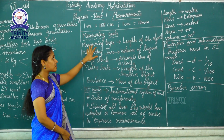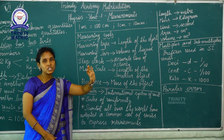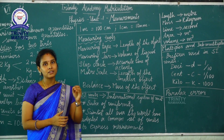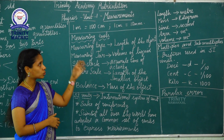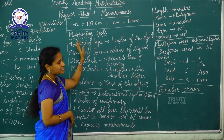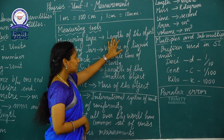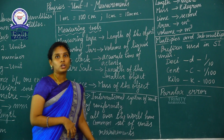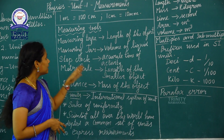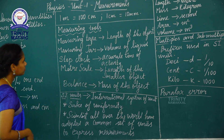Next we have to see measuring tools. What measuring tools can we use to measure an object? First one is measuring tape. It is used to measure the length of an object.